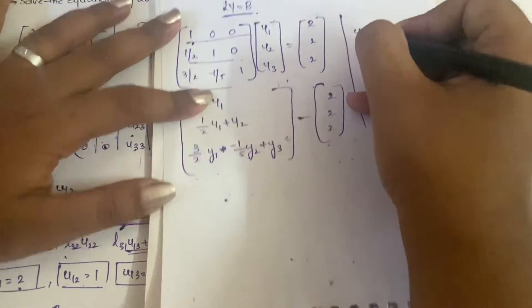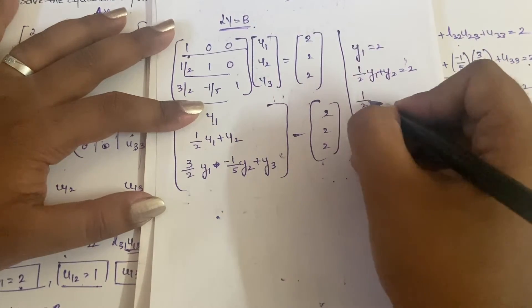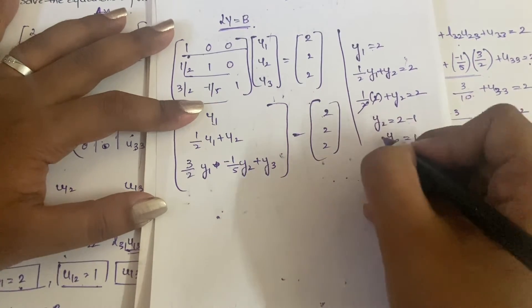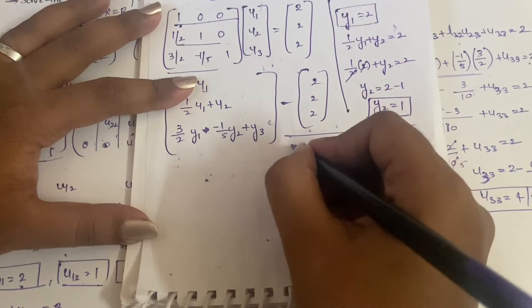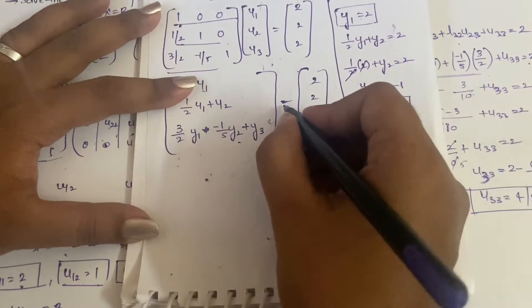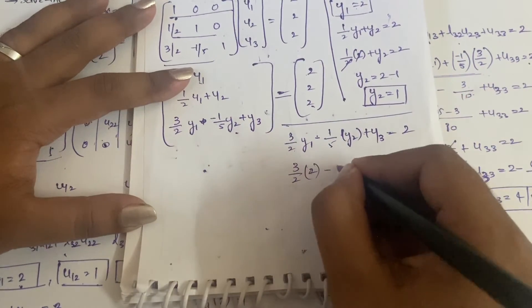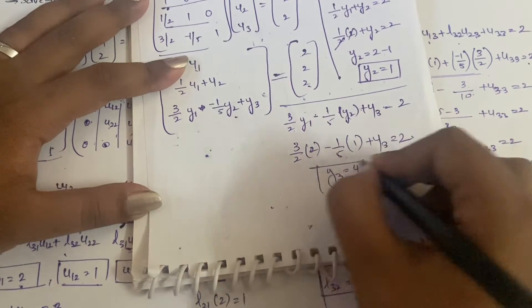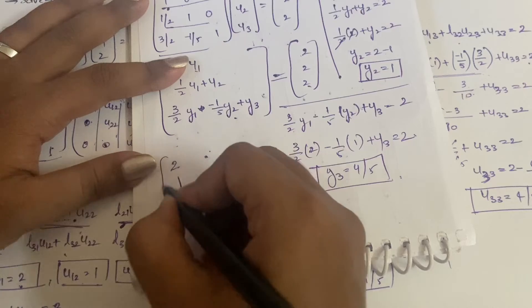From the equations: Y1 = 2 directly. Then 1/2×2 + Y2 = 2, so Y2 = 1. For Y3: 3/2×2 − 1/5×1 + Y3 = 2. Solving gives Y3 = −4/5. So the matrix Y = [2, 1, −4/5].